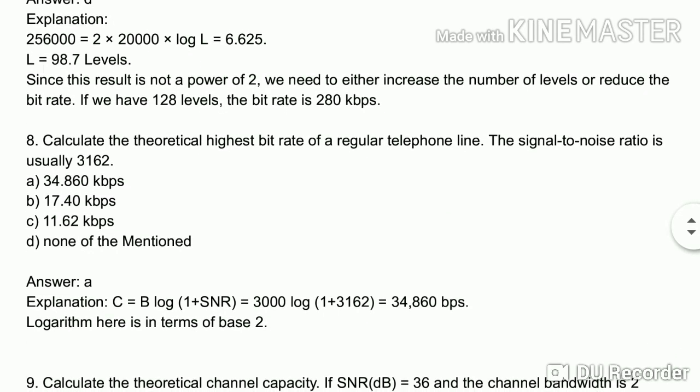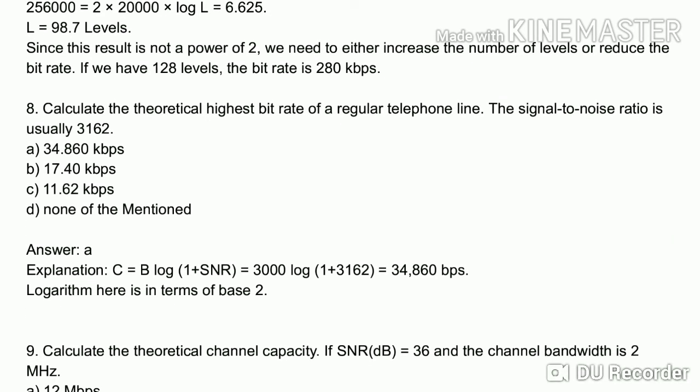Eighth question: calculate the theoretical highest bit rate of a regular telephone line. The signal-to-noise ratio is usually 3162. Since we have SNR, we use the Shannon theorem for noisy channels. The formula is C = B × log₂(1 + SNR), with bandwidth 3000 Hz and SNR 3162.